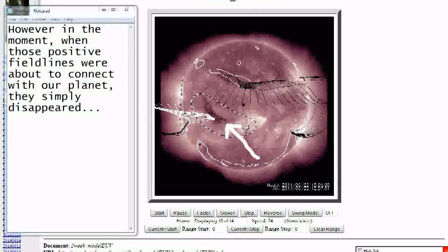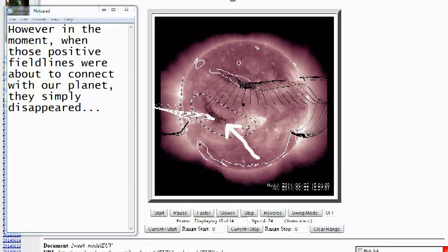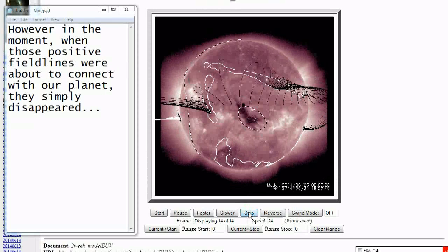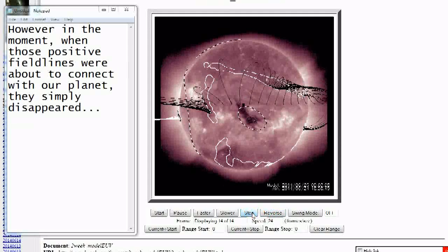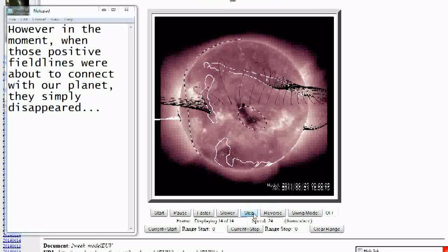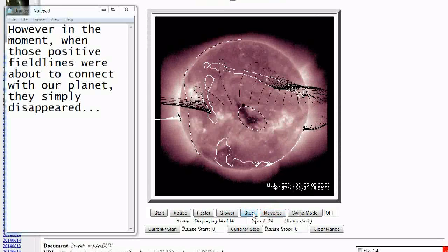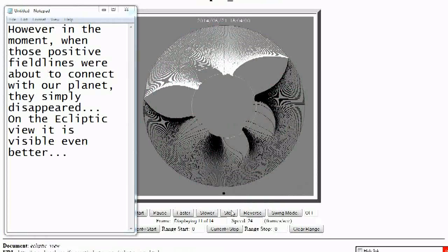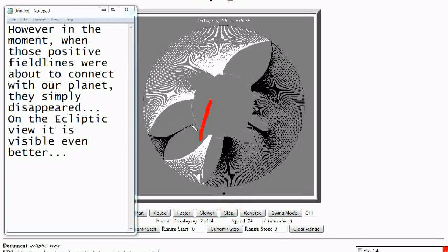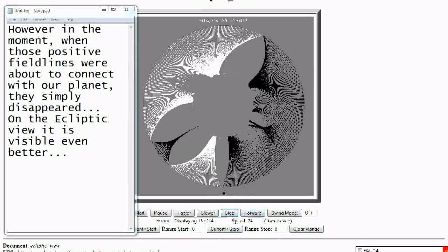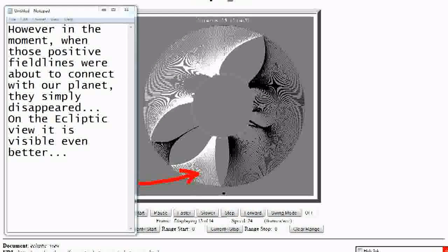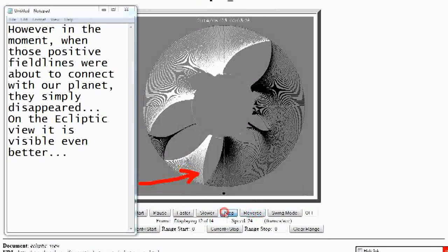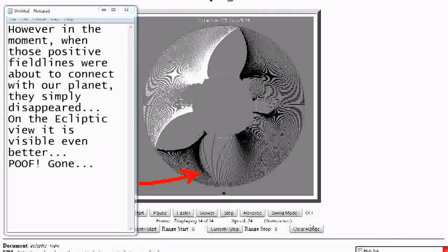However, in the moment when those positive field lines were about to connect with our planet, they simply disappeared. On the ecliptic view it is visible even better. Poof! Gone.